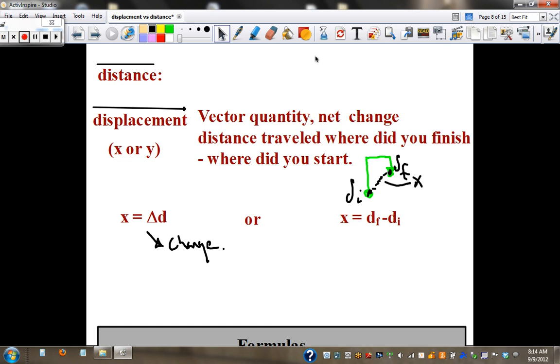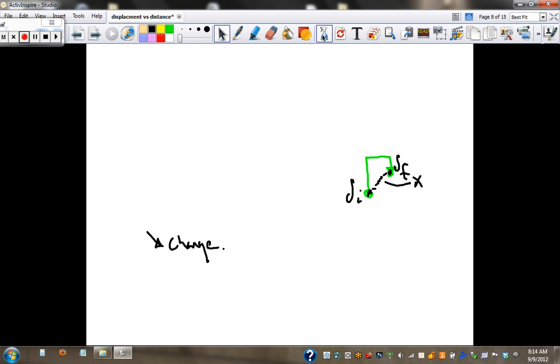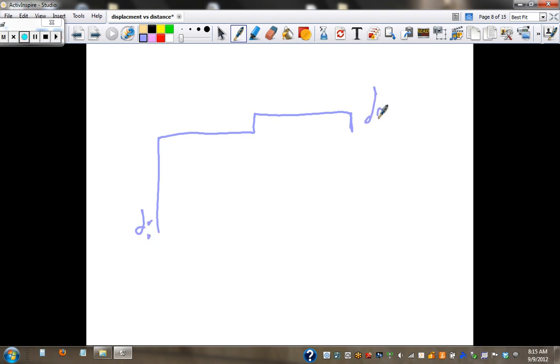In the picture I had everybody focus on, I had you draw this one line. We'll call this distance final, distance initial. Distance final means where did you end, distance initial means where did you start.